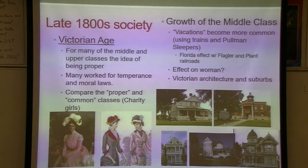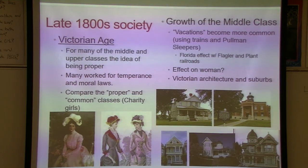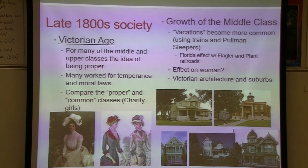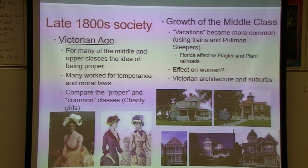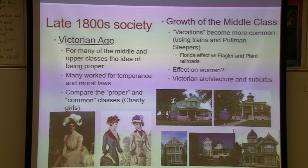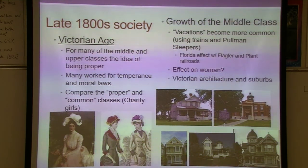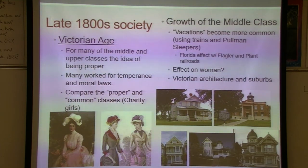The middle class grew significantly during this time. Vacations became more common — though not a week-long trip but perhaps a month or two away. Florida's Flagler and Plant hotels connected by railroads catered to this. For women, effects were both positive and negative: more women went to college but were still expected to return home to care for children and the house. Victorian architecture was very popular — two examples here are from Citrus County, including the McLeod house and the historic courthouse.